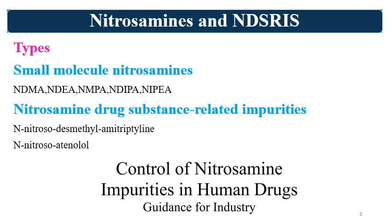Nitrosamines may be small-type nitrosamines or may have a structure resembling the API structure. As per their type, these are classified as small molecule nitrosamines and NDSRIs (Nitrosamine Drug Substance Related Impurities). Small molecule nitrosamines include NDMA, NDEA, NMPA, NDIPA, ENIPEA, and some others.